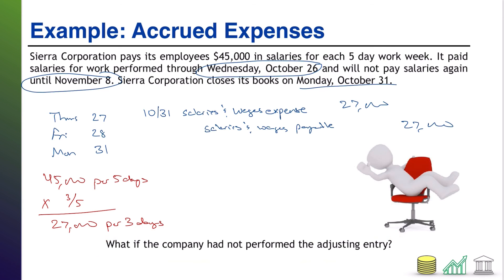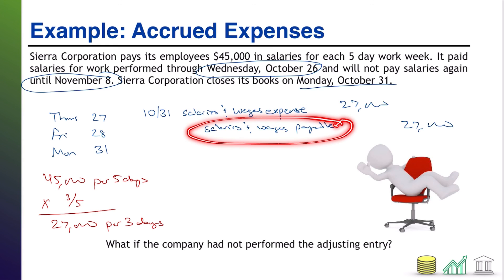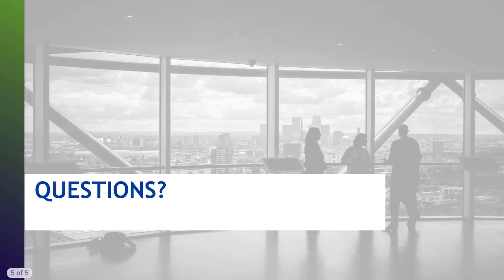Again, hypothetically, what if the company had not performed the adjusting entry? All of these are going to be the same thing: if we don't record this expense, we're going to overstate our income; if we don't record this liability, we're going to understate our liabilities. Combined, we're basically overstating our value for investors. That's the same thing that happens with any accrued expense — if you don't record it, you're going to overstate your value, which you definitely don't want to do because that's going to open you up to potential lawsuits. That's it for adjusting journal entries for accrued expenses. Hope you found this helpful.